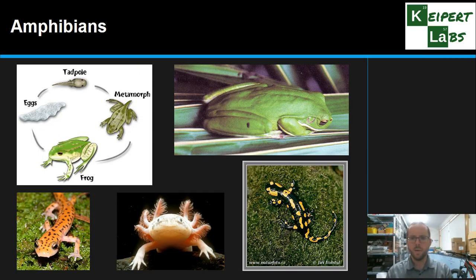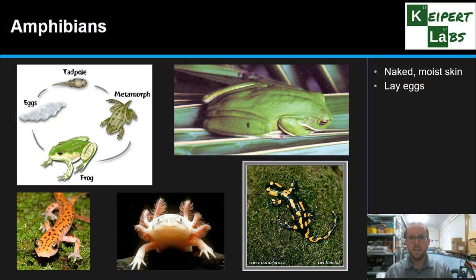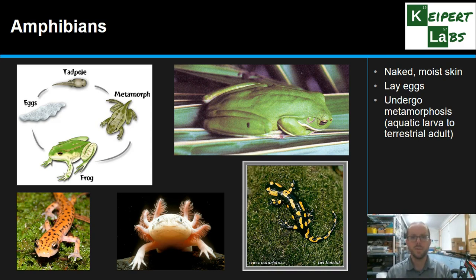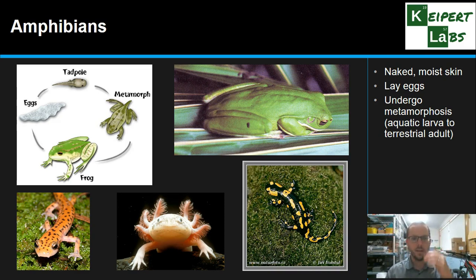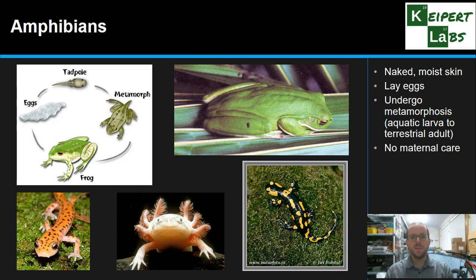After reptiles we look at amphibians, which are quite similar in some ways but not the same — try not to confuse the two. Amphibians have naked, moist skin rather than dry scales, hair, fur, or feathers. They tend to lay eggs. One key feature of amphibians is their connection between water and land: through their life cycle they undergo metamorphosis. For example, a frog is laid as eggs in water, develops into a tadpole which lives in water, then changes to become a land-based frog. The axolotl similarly lives in water and can change to become a salamander if the right hormones are introduced. The word 'amphibious' comes from this idea of being both water and land. There is typically no maternal care. Frog, cane toad, and salamander are all examples.